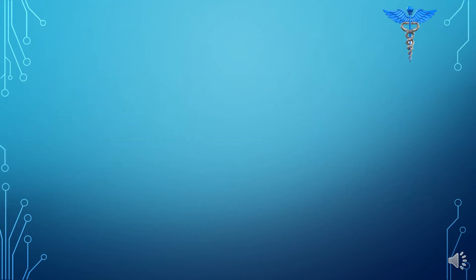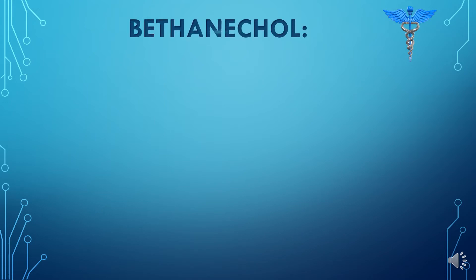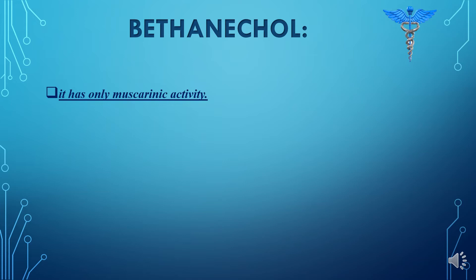The second cholinergic agonist is bethanechol. This is also a direct-acting cholinergic agonist, meaning it binds directly to the cholinergic receptors, but bethanechol only has muscarinic activity — it can bind only to the muscarinic receptor.